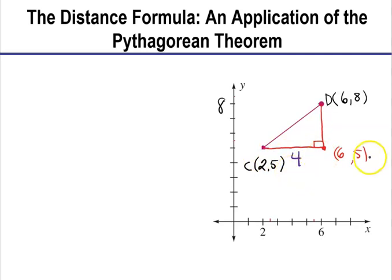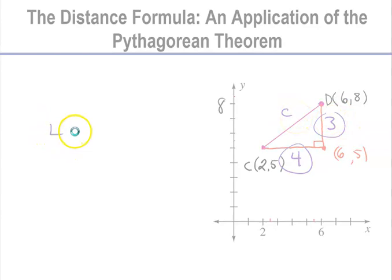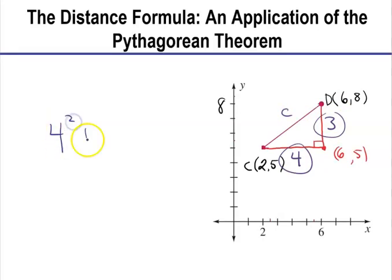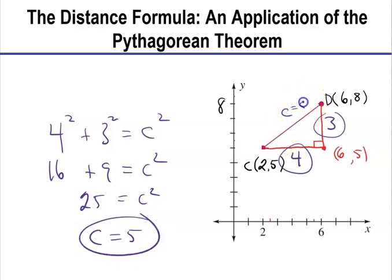How about the distance between (6,5) and (6,8)? Because they're both at the same x value, I can just subtract my y values and say this line is 3 units long. How's that going to help me find my distance? Well, we have a right triangle. This is a leg, and this is a leg — I'm looking for my hypotenuse. So 4 squared plus 3 squared equals c squared. That's 16 plus 9 equals c squared, so 25 equals c squared, and c is 5. I know my length of this line segment is 5, found using the Pythagorean Theorem.